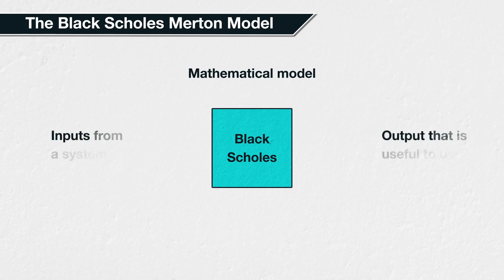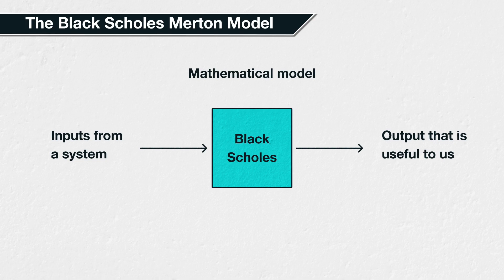A mathematical model is an attempt to translate the behaviour of some system into mathematical language. By doing so, it can allow for better understanding of the system, more powerful analysis, as well as testing the effect of changes. In very basic terms, we give the model some inputs and then it gives us something useful as an output.